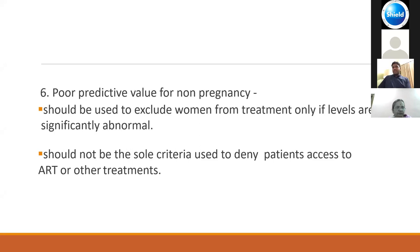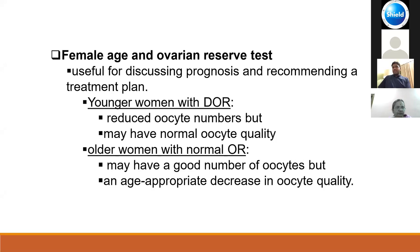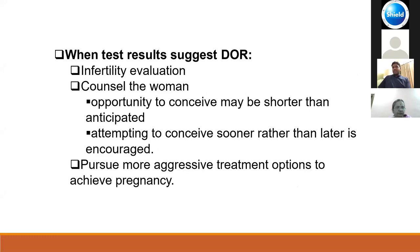Female age and ovarian reserve are useful for discussing prognosis and recommending treatment plans. There can be younger women with diminished ovarian reserve who have reduced oocyte numbers but good oocyte quality, and older women with normal ovarian reserve who have a good number of oocytes but with age-appropriate decrease in quality. When results suggest diminished ovarian reserve, counsel the woman that the opportunity to conceive may be shorter than anticipated, attempting to conceive sooner is encouraged, and a more aggressive treatment protocol should be pursued.